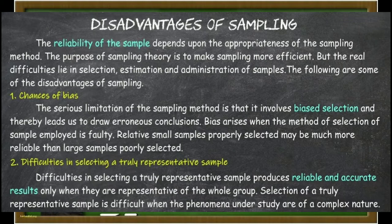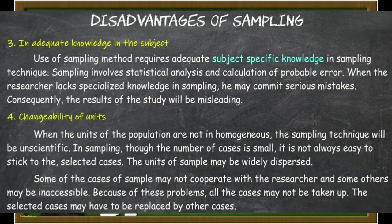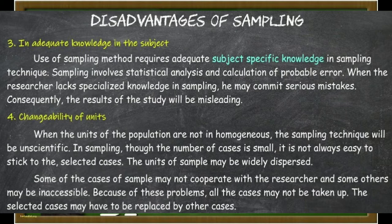Selecting a good sample is difficult. The third disadvantage of sampling is inadequate knowledge in the subject. Use of sampling method requires adequate subject-specific knowledge in sampling technique. Sampling involves statistical analysis and calculation of probable error. When the researcher lacks specialized knowledge in sampling, he may commit serious mistakes. Consequently, the results of the study will be misleading.